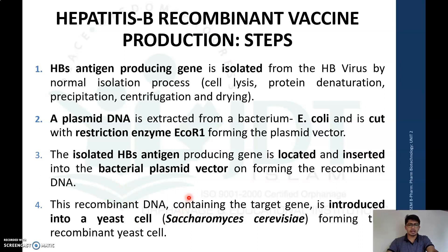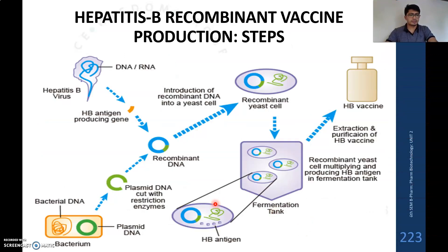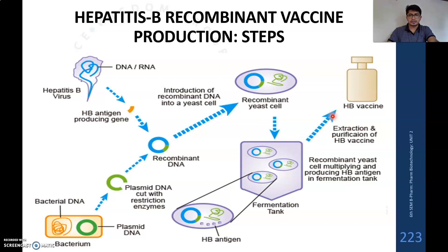This recombinant DNA, containing the bacterial plasmid and the isolated HBsAg gene, is introduced into the yeast cell Saccharomyces cerevisiae, forming the recombinant yeast cell. In the pictorial process, the plasmid is isolated from bacteria, cut with restriction endonuclease, combined with the HBsAg surface antigen gene from hepatitis B virus to form recombinant DNA, then transferred into Saccharomyces cerevisiae, and finally placed in a fermentation tank to produce surface antigens.